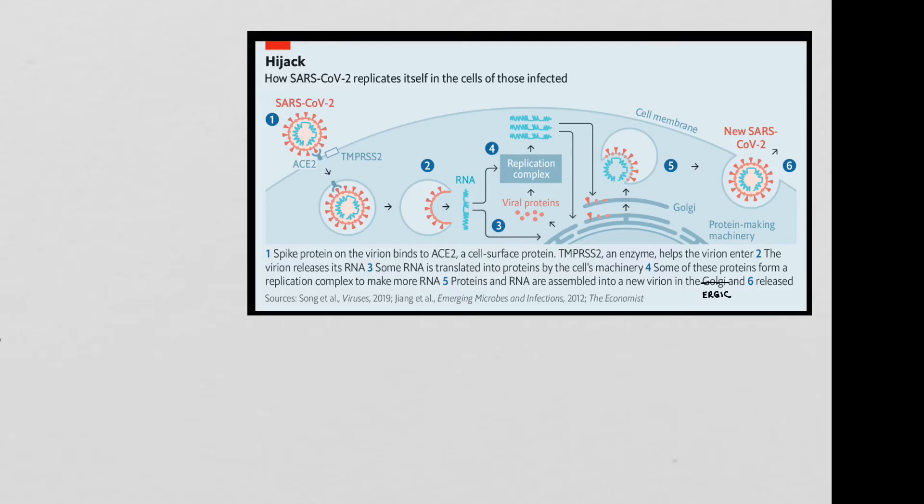That RNA is not reverse transcribed into DNA the way HIV, for example, would do it. Instead, it's used as a messenger RNA directly to be translated by the host cell ribosomes in the cytoplasm to make a collection of viral proteins. That, among other things, makes the machinery to make more RNA that is eventually going to be packaged into the newly synthesized virions. But many of these things are standard issue cell biology processes, some of which we talked about in the last class when we talked about co-translational translocation, which is what these arrows are.